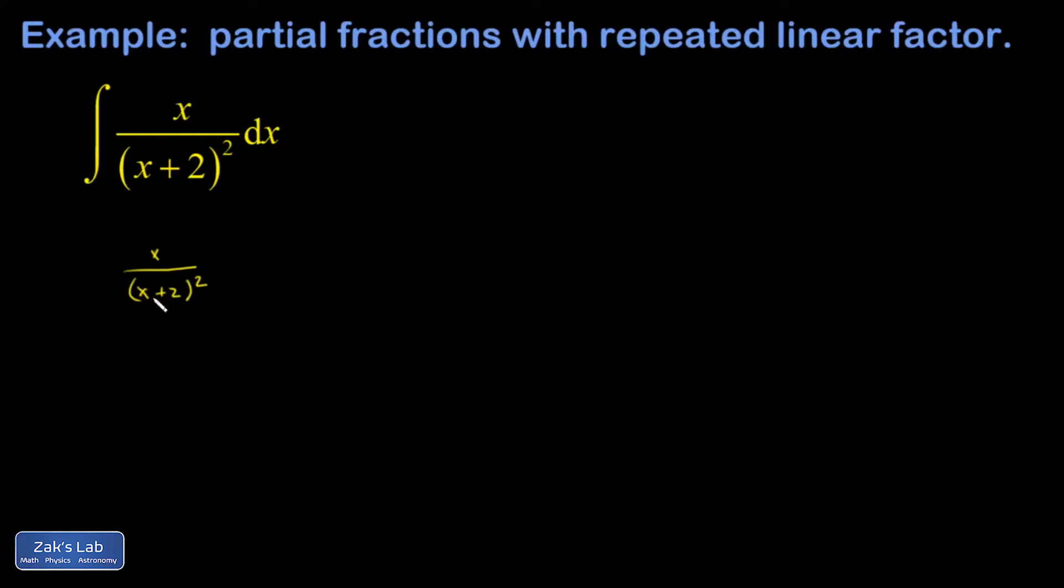I'll say that this integrand x over (x+2)² is equal to some unknown A over (x+2), that's the linear factor to the first power, plus some other unknown B over (x+2)².